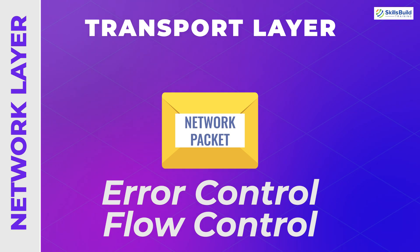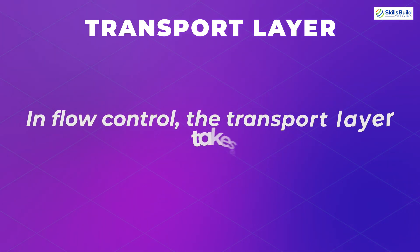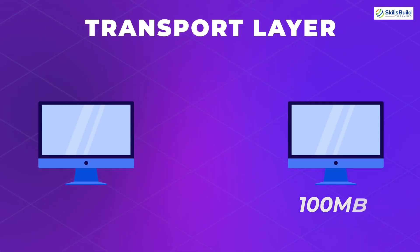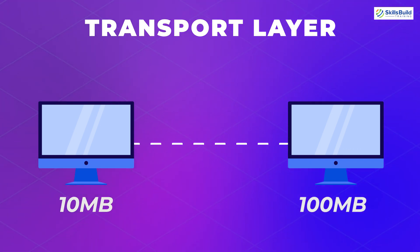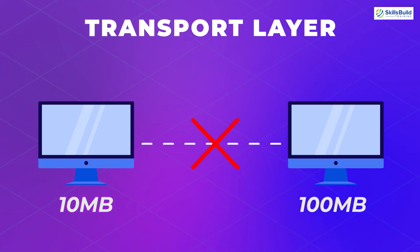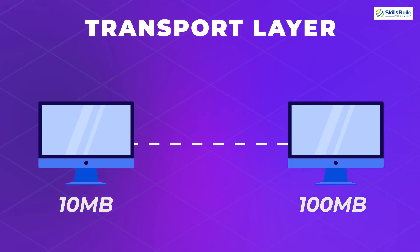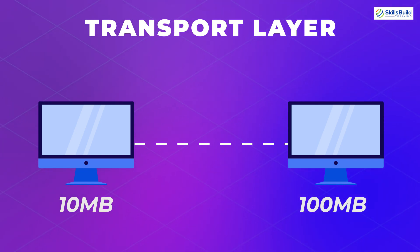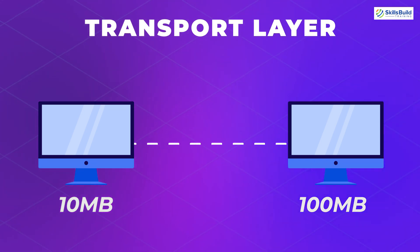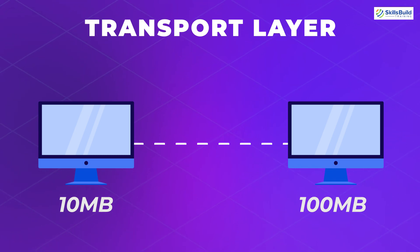The transport layer also implements error control and flow control. Error control ensures that data received at the receiving end is complete; if it is not, it requests retransmission. In flow control, the transport layer manages transmission speed. For example, if the sending device has a fast connection but the receiving device has a slow connection, the data could create a bottleneck. Flow control ensures the sender does not overload the receiver and does not send more data than the receiver's capacity.